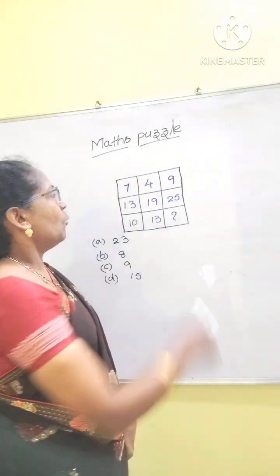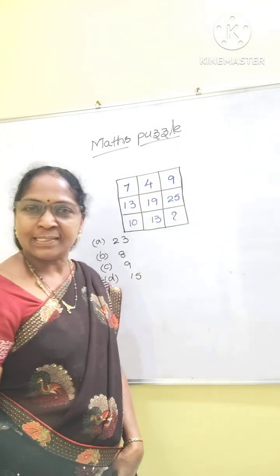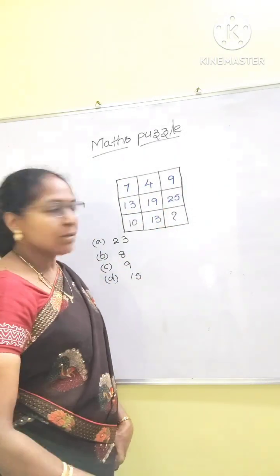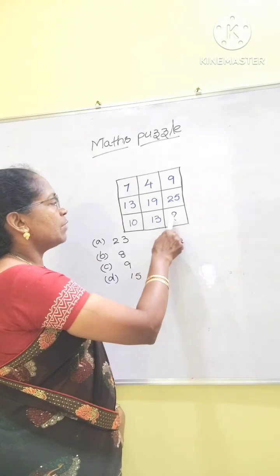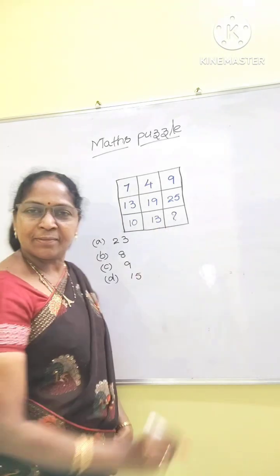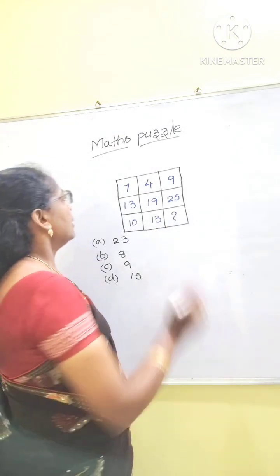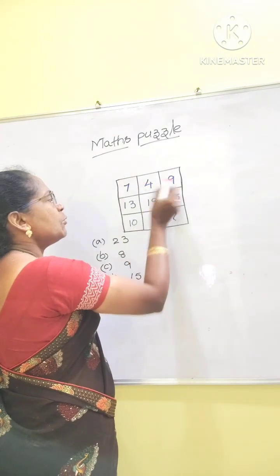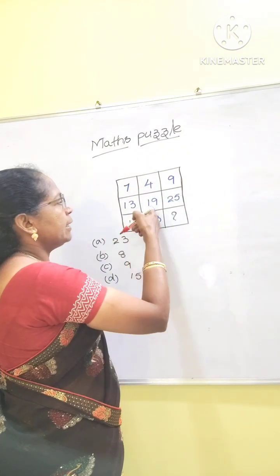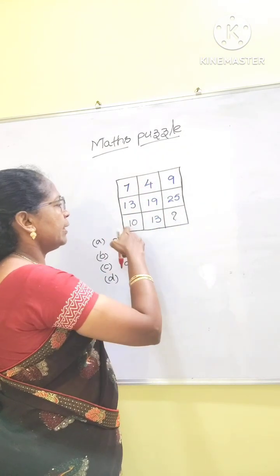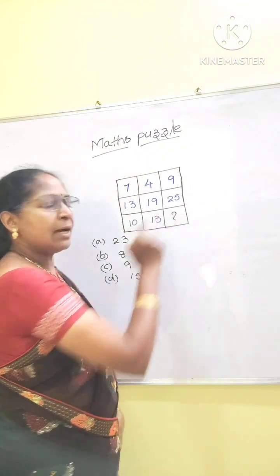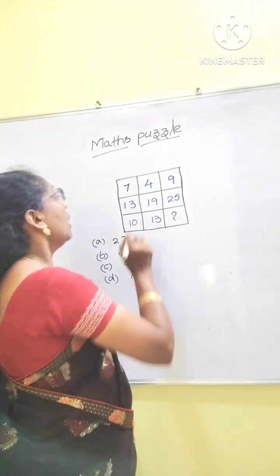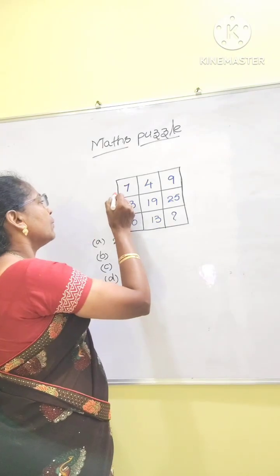Here, one math puzzle is there. In this square box, you have to find out this last value. In this 749 and 131925, 1013 and last number equal how much? How can you find out?